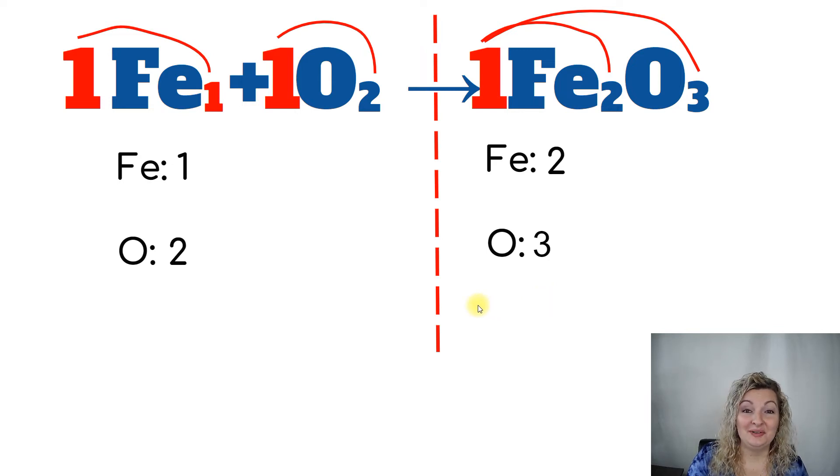Now if you're looking just really quick, Fe is 1 over here and 2 on the product side. So the reactant side is not equal to the product side. Therefore, this is unbalanced. And then you would have to use stoichiometry to balance it. Check out my other videos for that.